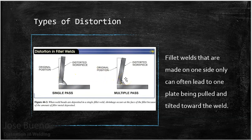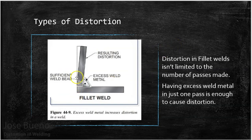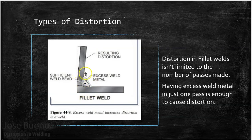More heat equals more expansion and more contraction. If there's only one pass in a fillet weld but still a lot of distortion, it could be because travel speed was too slow or current was too high, depositing more filler metal than needed. This leads to more surface area being heated, more expansion, and more contraction when it cools. So even with one weld, if the weld is too big, it's going to distort more.